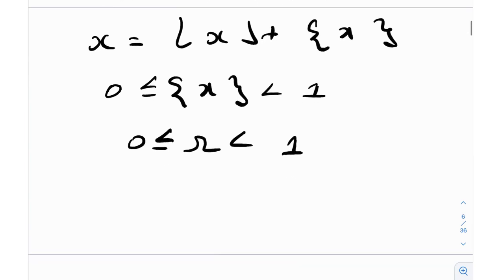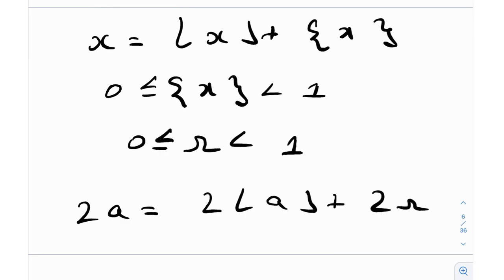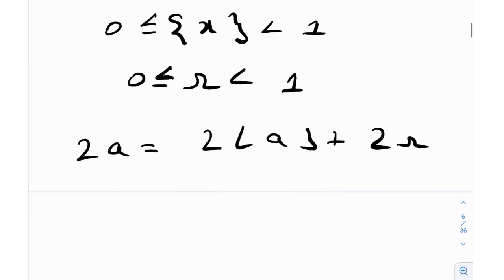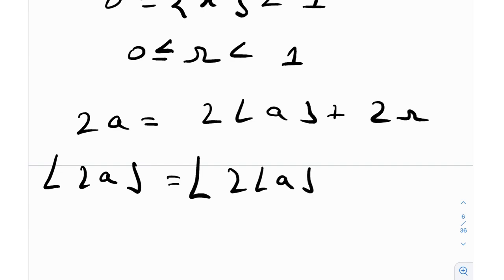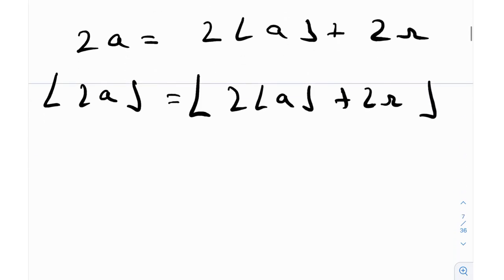Since a = ⌊a⌋ + r, we get 2a = 2⌊a⌋ + 2r. Now taking the floor of both sides, ⌊2a⌋ equals the floor of the entire quantity 2⌊a⌋ + 2r.